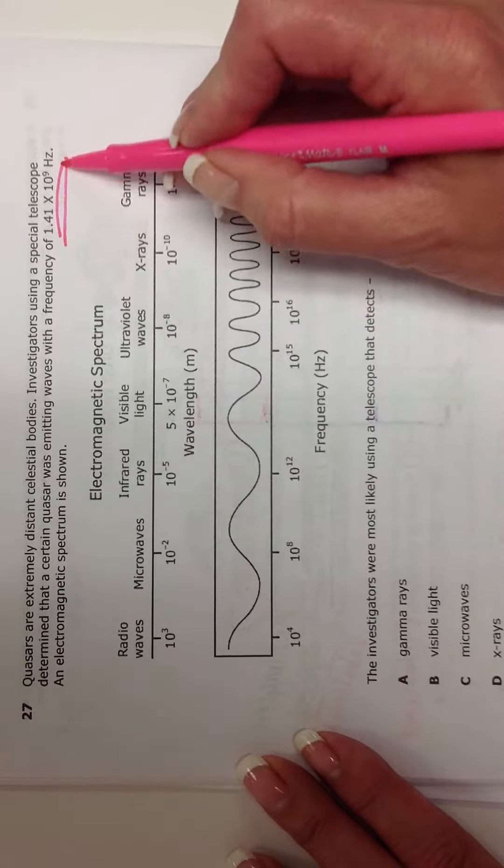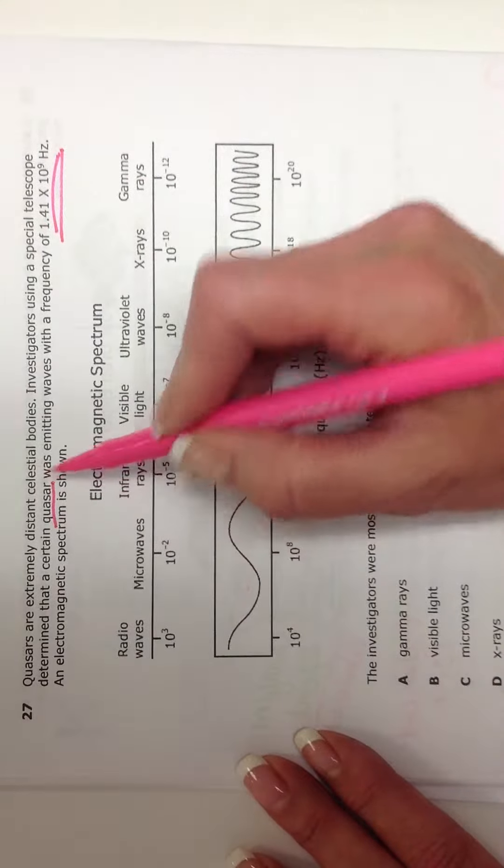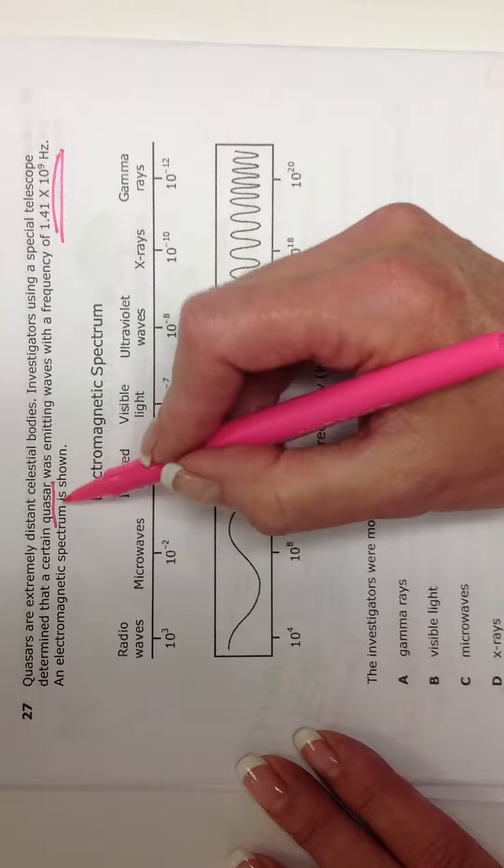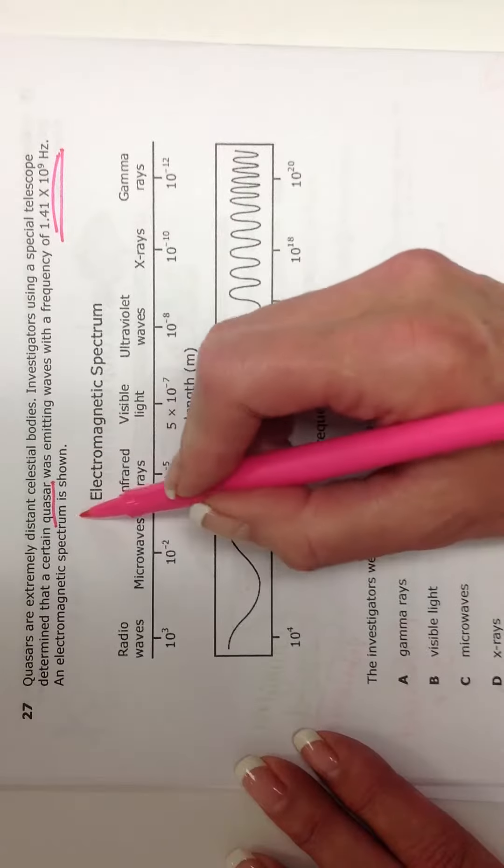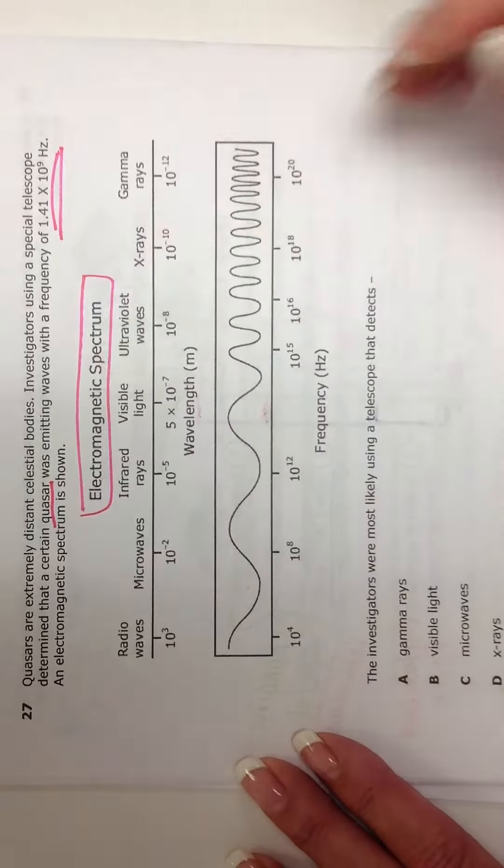Okay, so this quasar, it's a type of star. An electromagnetic spectrum is shown below. Here's our electromagnetic spectrum.